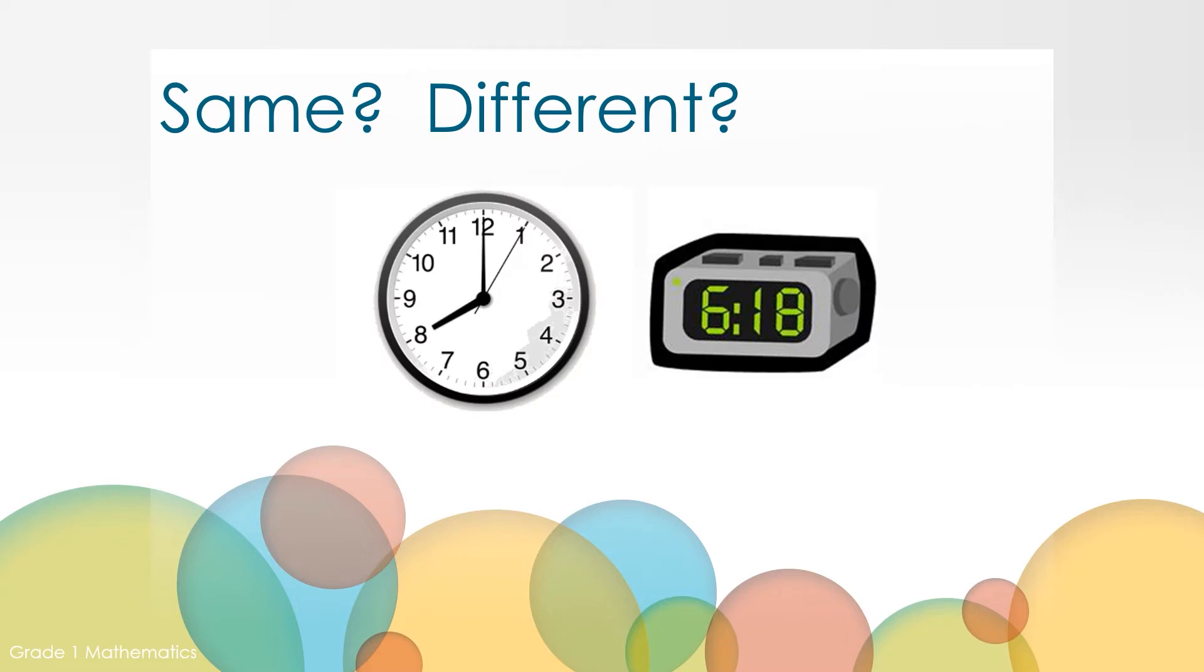Take a moment and look at these two clocks. These clocks are the same because they both help people tell the time. They are different because they are saying different times. The round clock is 8 o'clock and the rectangular prism is 6:18. They both have backgrounds. Maybe you saw that one clock has arms on it pointing at the numbers and the other clock doesn't have arms. These clocks are also different because one clock is called an analog clock and one clock is called a digital clock. Let's learn about these two types of clocks.